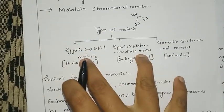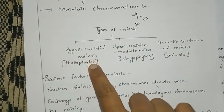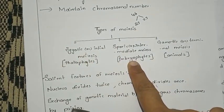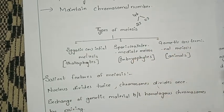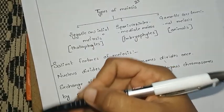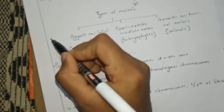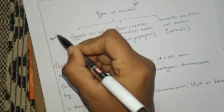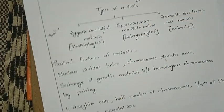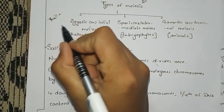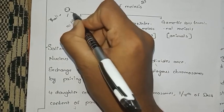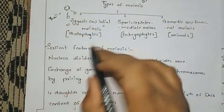Meiosis is divided into three types: Zygotic or Initial meiosis, Sporoid or Intermediate meiosis, and Gametic or Terminal meiosis. Zygotic meiosis occurs in thallophytes. In thallophytes, two zygotes are formed. It is a reduction division and is the starting point — that is Zygotic meiosis.